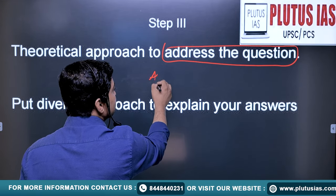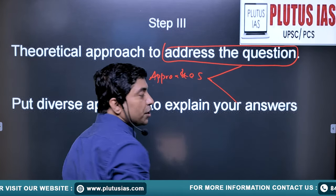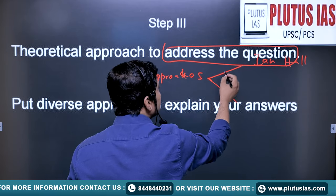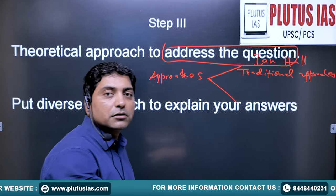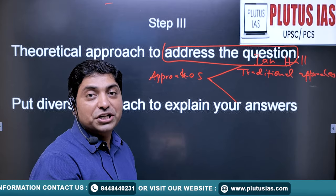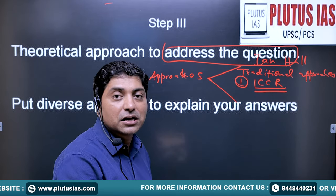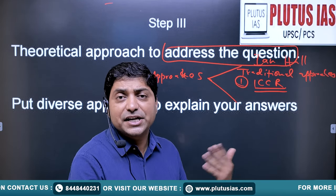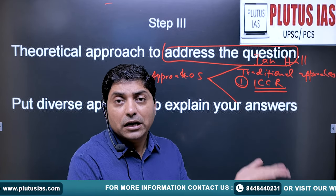Now if you see, the question is asking about approaches. Here you can put two approaches according to Ian Hall. Ian Hall is a scholar who talked about Indian public diplomacy and put forward two approaches. One is the traditional approach. How India has approached public diplomacy traditionally — he talked about three institutions. One is ICCR, the Indian Council for Cultural Relations, which plays a very important role in shaping India's culture, food, history, music, and art abroad. It is making people of other countries aware about India's culture.